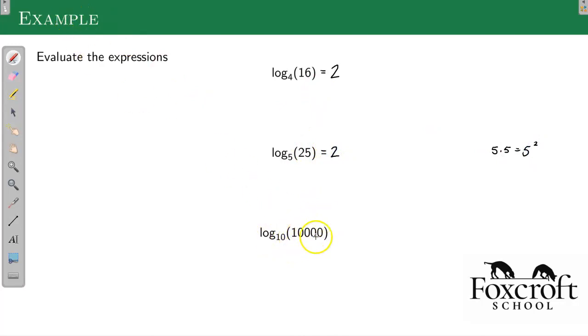And log base 10 of 10,000. What is this going to be? How many times do I have to multiply 10 by itself to get 10,000? Well, it's 1, 2, 3, 4. All right. This answer is 4. 10 is nice. You just count the zeros. So 10 to the 4th is 10,000.